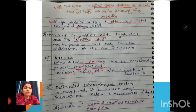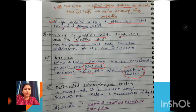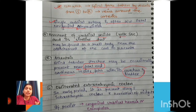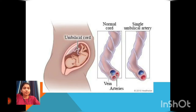The allantois is a blind tubular structure, occasionally present near the fetal end, continuous inside the fetus with the urachus. The obliterated extra-embryonic coelum is present in the early period along with the intra-embryonic coelum. Herniation of the midgut can lead to congenital umbilical hernia or exomphalos.